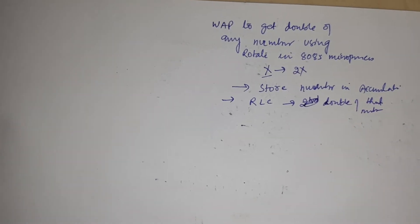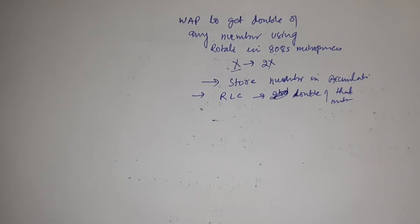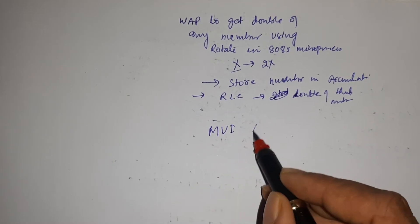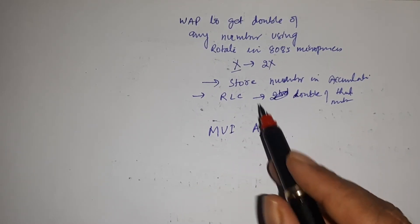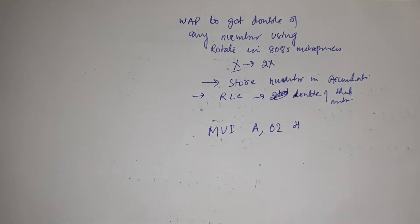This is a program you have to write in 8085 microprocessor using assembly language. Firstly, store that number in accumulator. Suppose that number is 02, here I have stored 02.